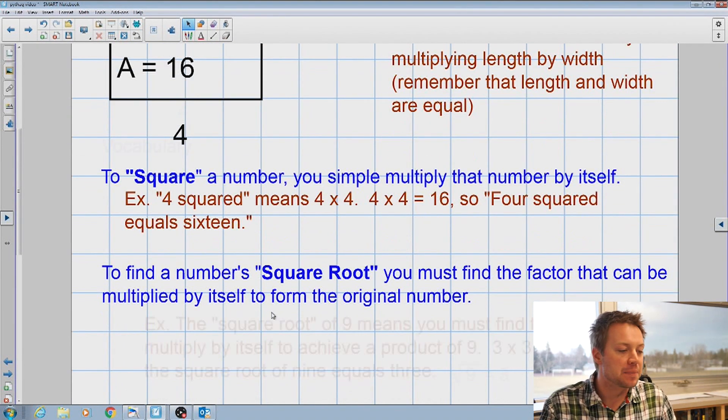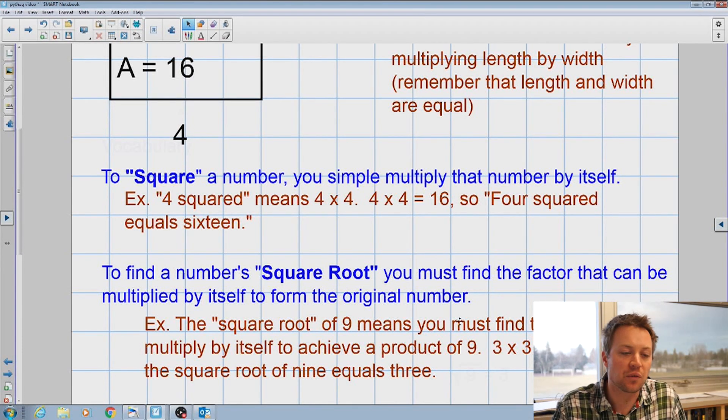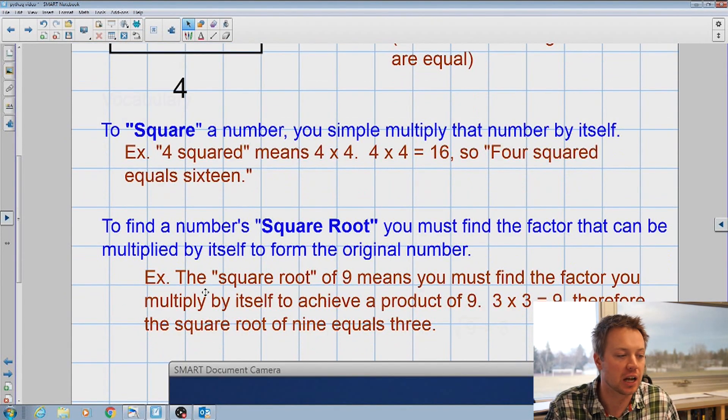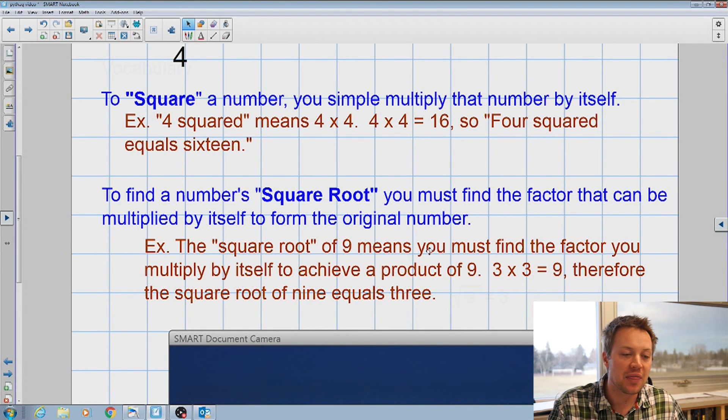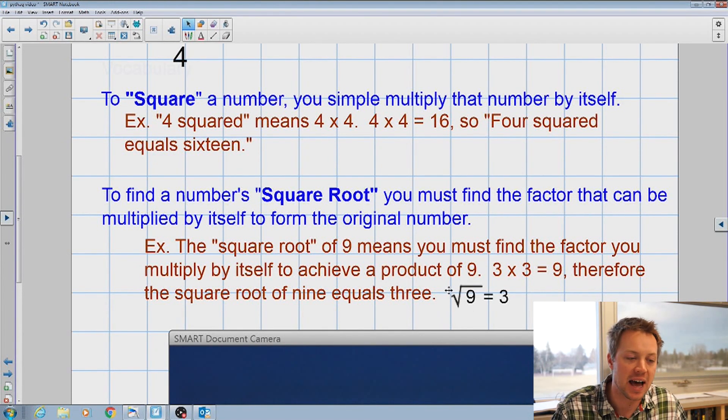Now, to go backwards from that, to find a number's square root, what you're looking for is a factor that can be multiplied by itself to form that original number. So for the example, if I'm asking for the square root of nine, that means you need to find the factor that you multiply by itself to produce nine or to make nine as a product. We all know that three times three equals nine, and therefore the square root of nine equals three. And we write that with a little square root sign, nine underneath, and that equals three. Basically, we know that three is the factor you multiply by itself to make nine, and that's the definition of a square root.